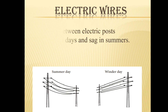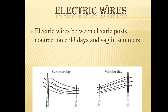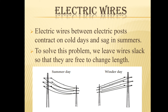Electric wires between electric posts contract on cold days and sag in summers. To solve this problem, wires are left slack so that they are free to change length. The two uses of thermal expansion discussed are fitting the iron rim on the wooden wheel and riveting. The thermal expansion examples discussed are gaps between rails on a railway track, gaps between joints of a concrete bridge, cracking of a thick glass tumbler, and behavior of electric wires.